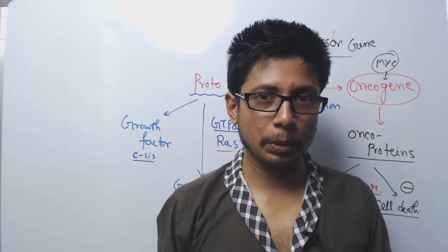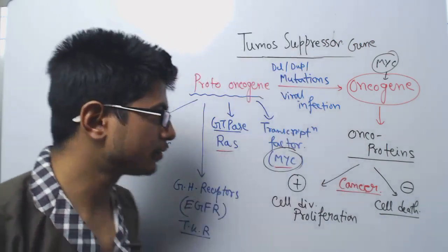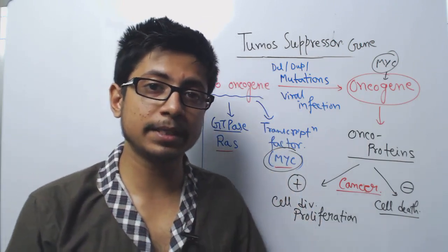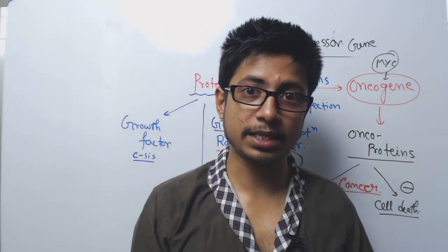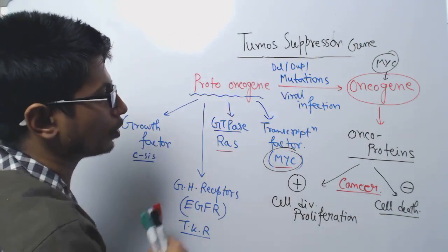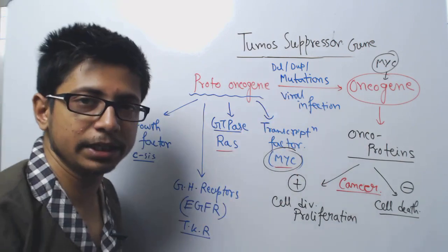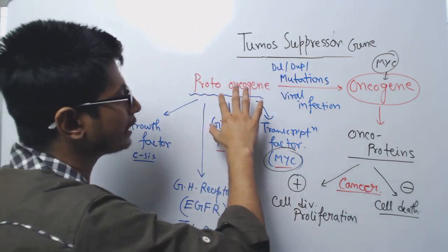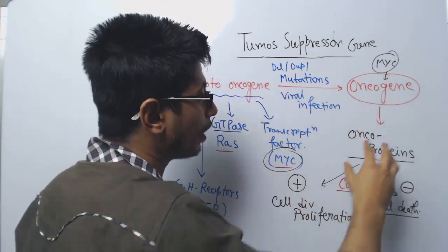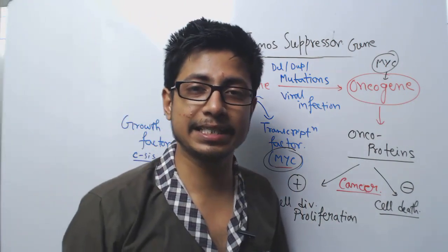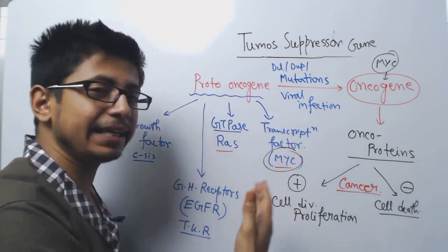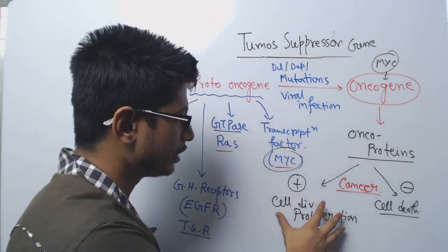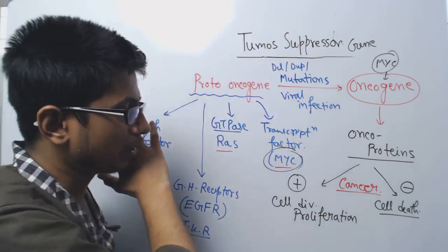In the last video, we talked about proto-oncogenes and oncogenes. Proto-oncogenes are specific genes present in our body that help the cell grow, divide, differentiate, and proliferate. If there is any mutation in proto-oncogenes due to viral infections, deletion, duplication, or chromosomal translocation, they can be converted into oncogenes. Once converted to oncogenes, the proto-oncogene functionality is enhanced, causing cells to keep dividing and proliferating, leading to cancer.